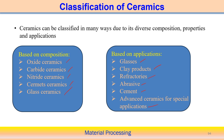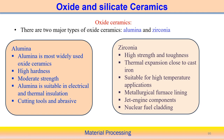Looking at oxide ceramics, the most important oxide ceramics are alumina (Al₂O₃) and zirconia. Alumina is the most widely used oxide ceramic — it has very high hardness and moderate strength. Alumina is suitable for electrical and thermal insulation. Interestingly, aluminium has very good thermal and electrical conductivity, but when converted to the oxide — alumina — it can be used as electrical insulation or thermal insulation.